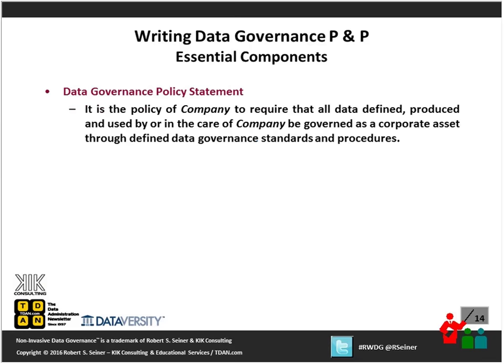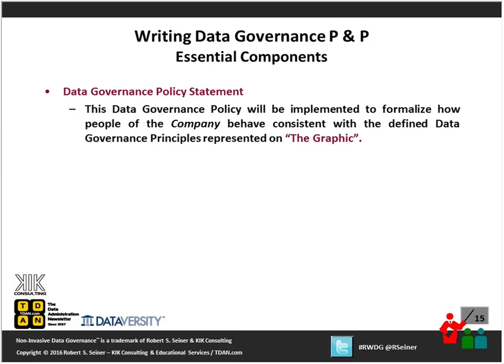Putting together a data governance policy statement — something that represents the policy to the organization — here's an example: 'It is a policy of our company to require that all data defined, produced, and used by or in care of the company be governed as a corporate asset through defined governance standards and procedures.' That's a generic but usable policy statement that can be tweaked to things specific to your organization. Coming back to those principles, data governance policy will be implemented to formalize how people of the company behave — we're governing people's behavior consistent with the defined data governance principles.